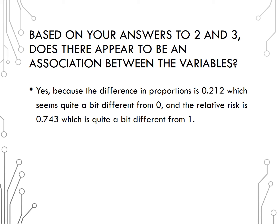Based on the difference in proportions or relative risk, does there appear to be an association between the variables? Yes, there does appear to be an association between gender and support or not for the bill. Why? Because that difference in proportions of 0.212 seems pretty far from 0, and the relative risk of 0.743 also seems pretty far from 1. Zero for a difference in proportions or 1 for relative risk would indicate no association.